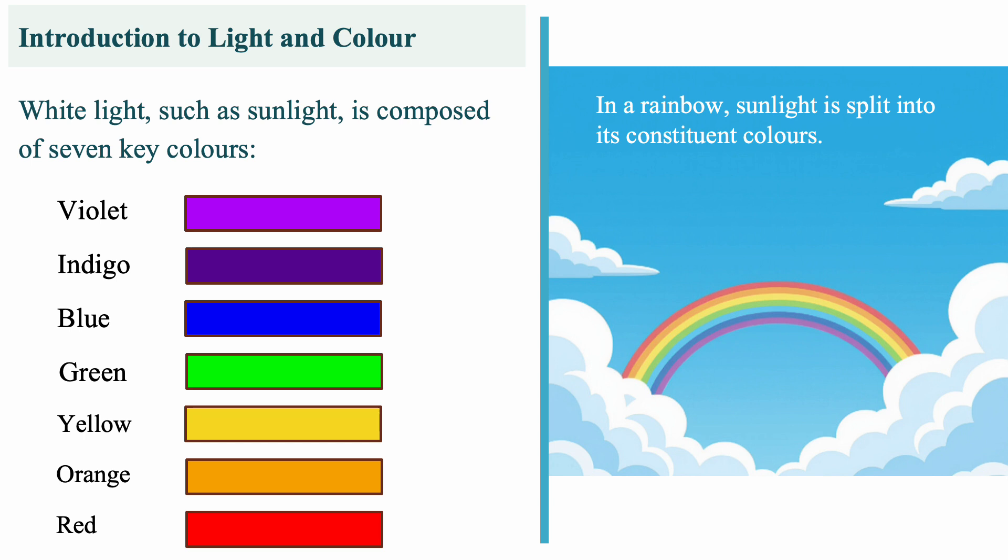We can see this clearly in a rainbow, where sunlight is split into these components. This is known as the spectrum of visible light.